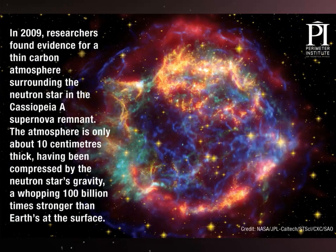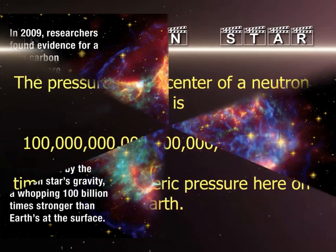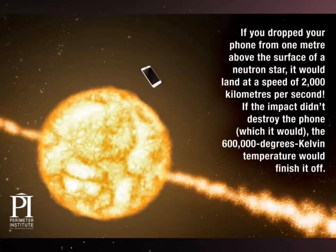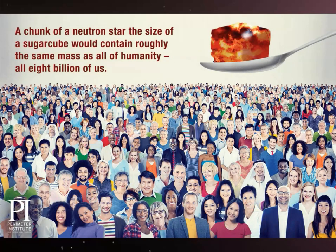In 2009, researchers found evidence for a thin carbon atmosphere surrounding the neutron star in the Cassiopeia A supernova remnant — only 10 centimeters thick, compressed by gravity 100 billion times stronger than Earth's surface. Mathematically, if you dropped your phone from one meter above a neutron star's surface, it would land at 2,000 kilometers per second, and if the impact didn't destroy it, the 600,000 Kelvin temperature would. A chunk of neutron star the size of a sugar cube would contain roughly the same mass as all of humanity.